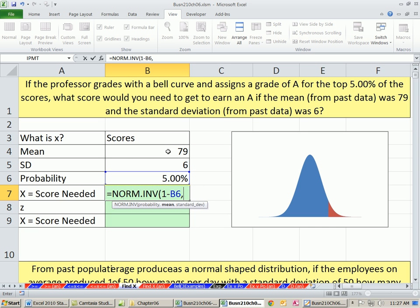We need to enter the mean and the standard deviation. And there we go. The magic number for an A is 88.869.